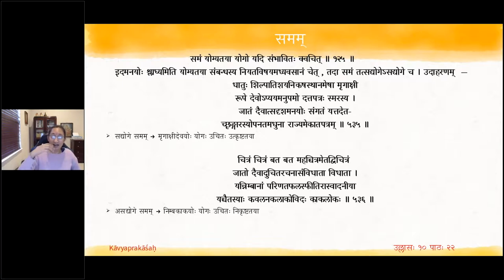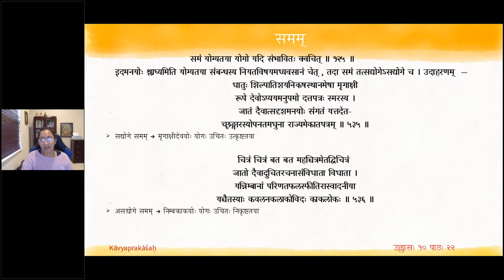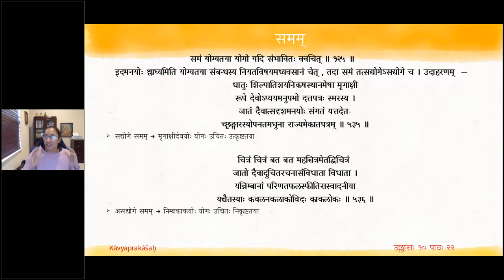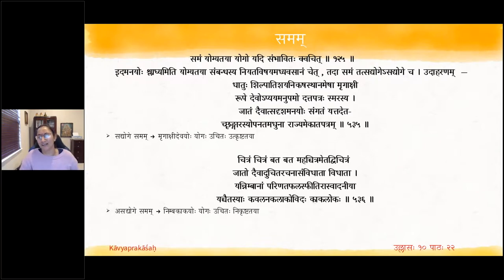Second example showing nikrishtatvam: Chitram, chitram — how wonderful! Daivat uchita tara rachana samvidhata vidhata jatah — Brahma has become the greatest creator of appropriate combinations. He has created the Nimbha (Neem) fruit and also created the Kaka (crow) which finds the Neem fruit most tasty. Parinatha phala spheetih — the ripe Neem fruit cluster — aswadhaniya jata kaakalokah, kavala na kala kovidah — the crow, expert in the art of swallowing, relishes it.